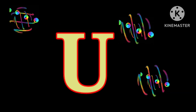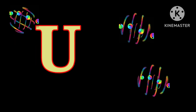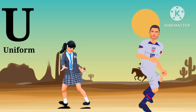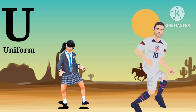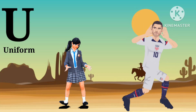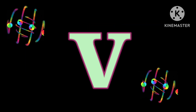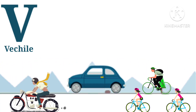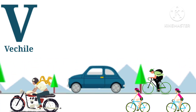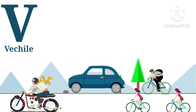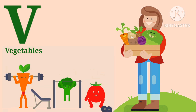U, it's capital U. U for uniform, uniform. U for umbrella, umbrella. V, it's capital V. V for vehicle. V for vegetables, vegetables.